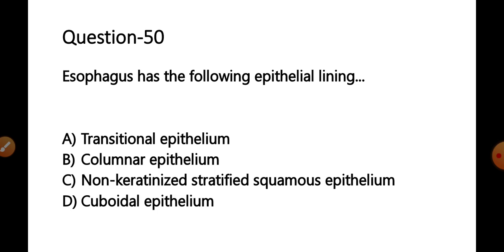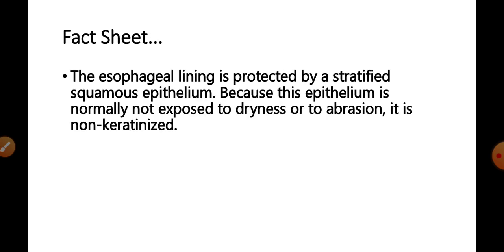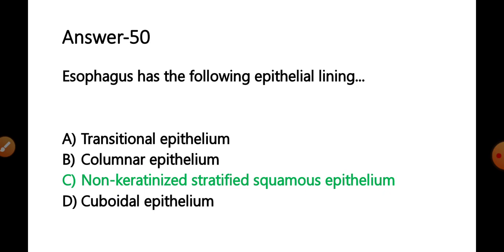Question 50: The esophagus has the following epithelial lining — options: A) transitional epithelium, B) columnar epithelium, C) non-keratinized stratified squamous epithelium, D) cuboidal epithelium. The esophageal lining is protected by stratified squamous epithelium. Because this tissue is not exposed to dryness or significant abrasion, it is non-keratinized. The correct answer is option C — non-keratinized stratified squamous epithelium.